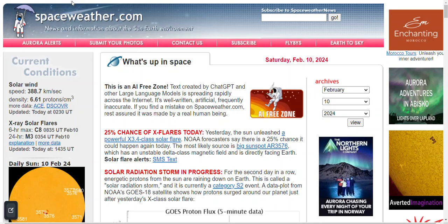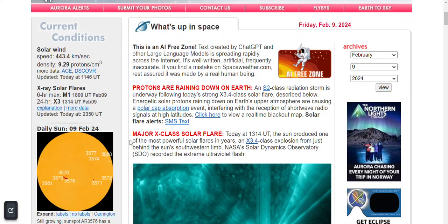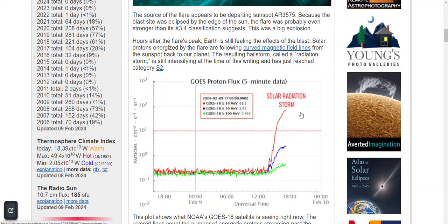Saturday, February 10th. Heads up on the Sun - spaceweather.com. I recommend everybody go see it, read it, go to the archive here and check out the ninth, also yesterday's Friday information about the protons raining down on Earth. There's a lot of information and data. We're going through a solar radiation storm, people.